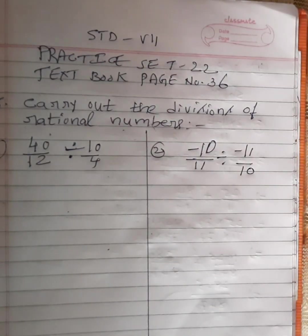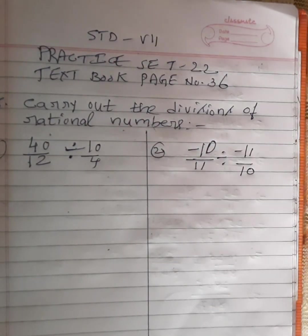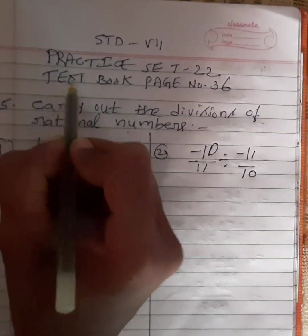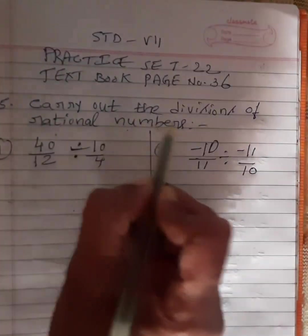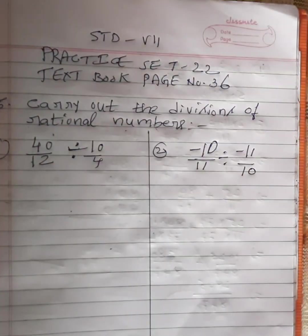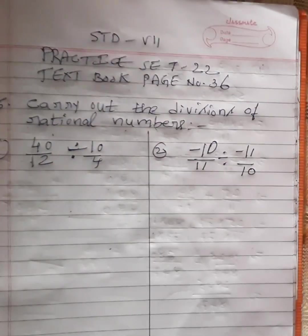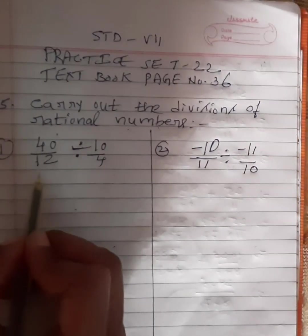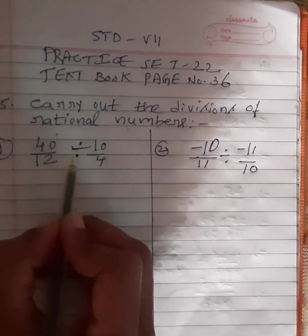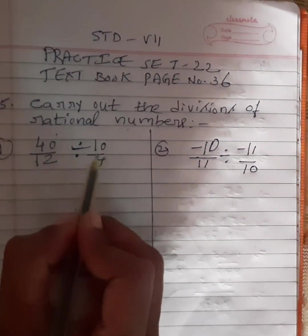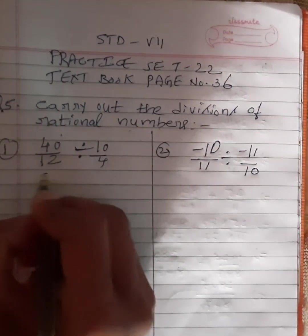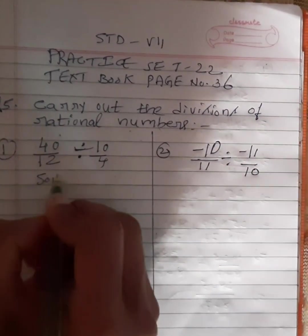Hello everyone, today we are going to discuss Standard 7th, Practice Section 22, Textbook page number 36. In this first question, 40 by 12 divided by 10 by 4. We have to make a solution for this.